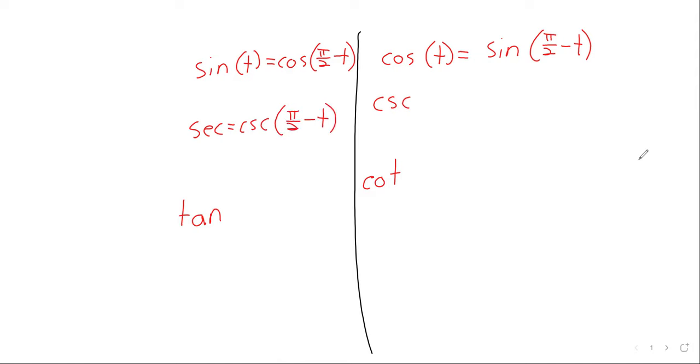So these are all going to look the same. Secant is the cosecant of pi over two minus t. The tangent is the cotangent of pi over two minus t, and the cotangent is the tangent of pi over two minus t. Just that same pattern repeated three times. Then, and I warned you, the remainder of this section would be kind of disjointed.